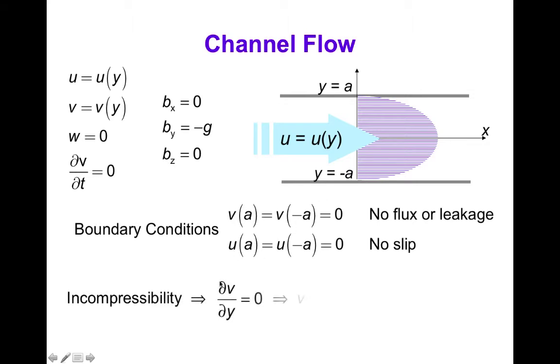Now we can use incompressibility, which reduces to del v del y equals zero, which in turn implies that v equals constant. But since v equals zero on the boundaries, that means v is zero everywhere. And so now, without having to assume that there's no y component of the velocity, we can actually use incompressibility to show that that's true, provided we stipulate that u and v were only functions of y.